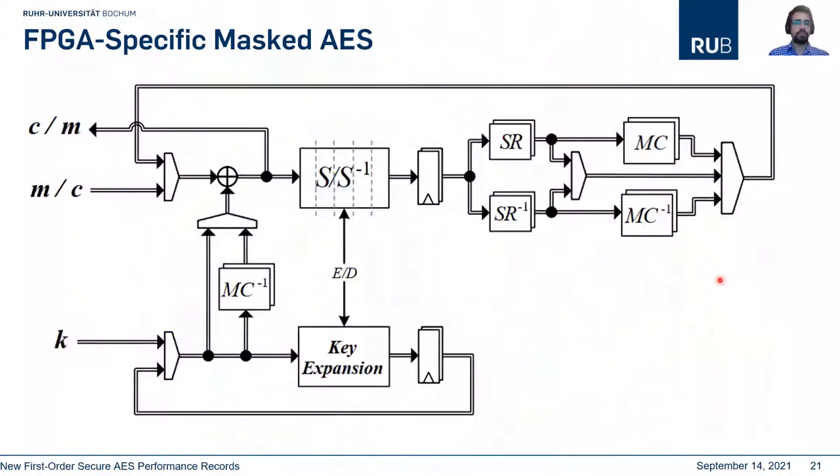The general structure of our FPGA-specific masked AES is here. Basically we have a control signal here. Then we can decide we want to perform AES encryption or decryption and depends on the mix column or mix column inverse or shift row or shift row inverse is applied.